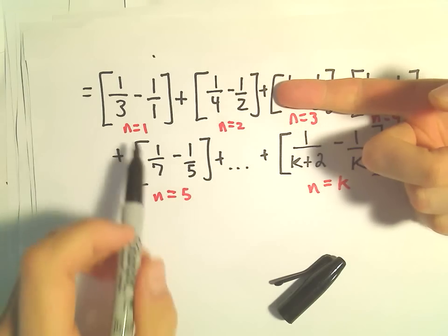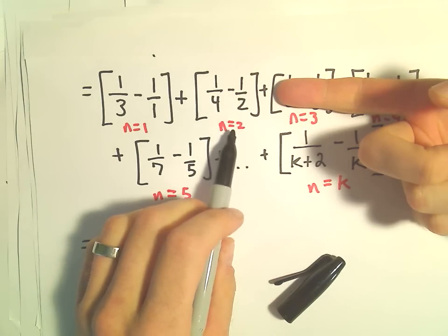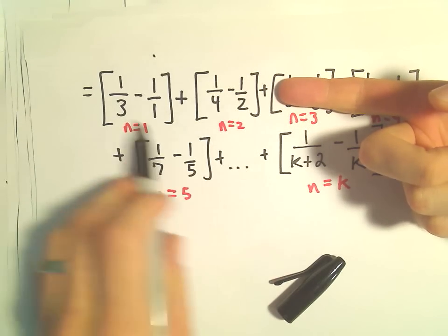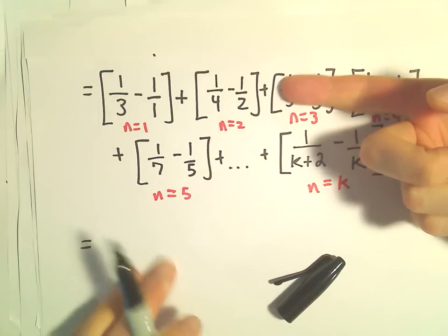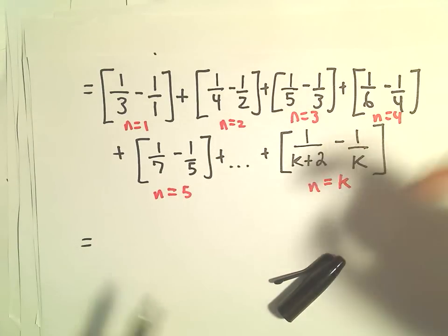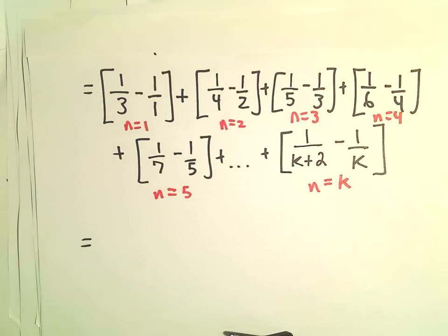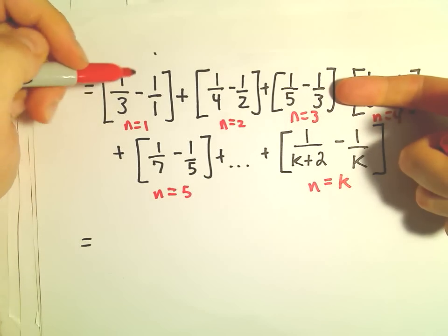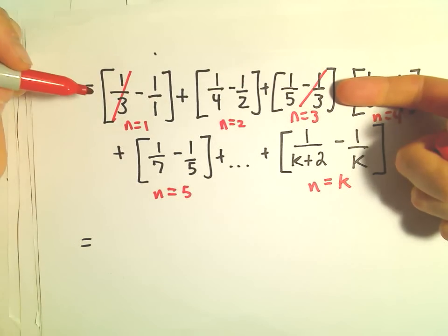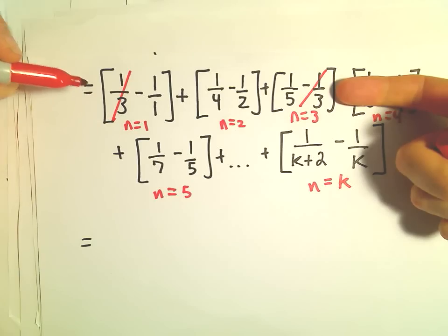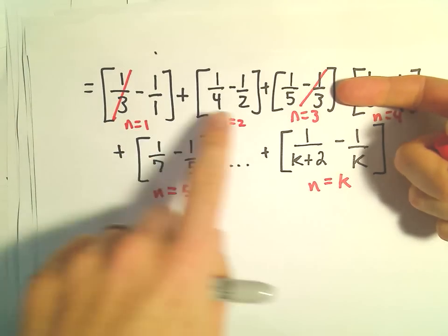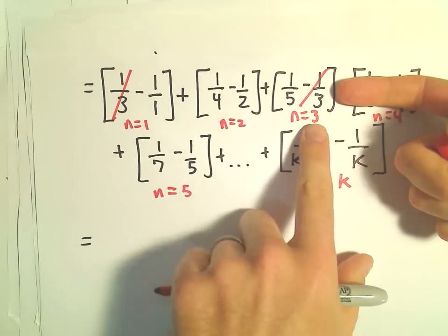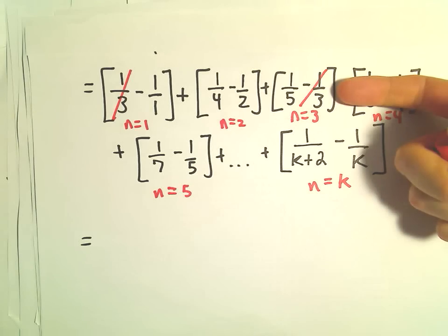If we plug in n equals 2, notice again, sort of nothing, it doesn't to me look like anything would just immediately cancel out. If we plug in n equals 3, though, at n equals 3, things will start canceling a little bit. So at n equals 3, it looks like the negative 1 third and the positive 1 third would cancel. Okay, so we'd be left with negative 1, negative 1 half, and then we would have a fourth and a fifth left over.